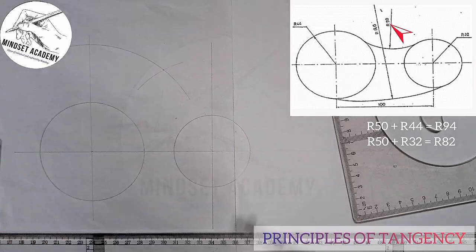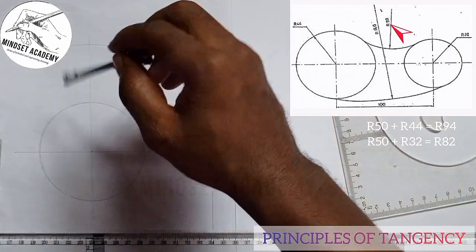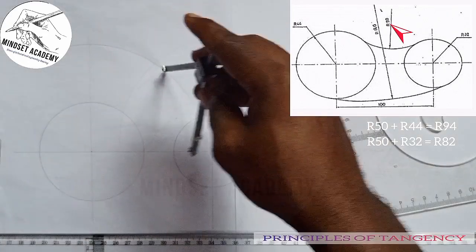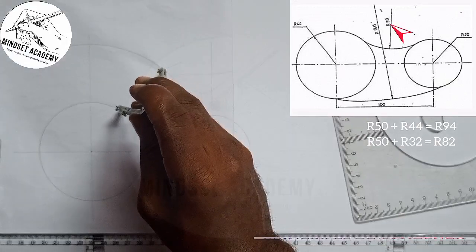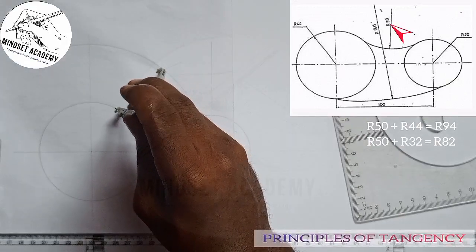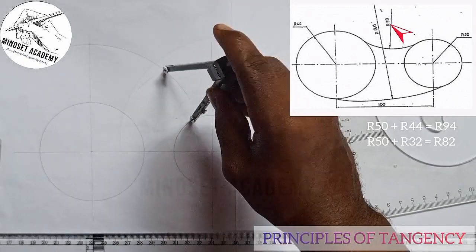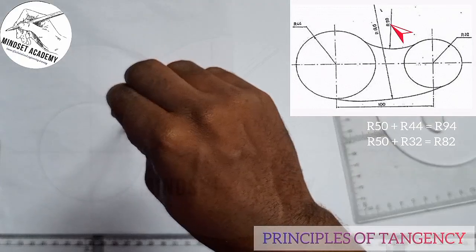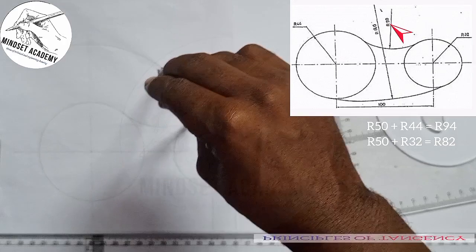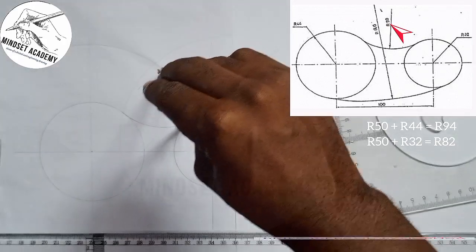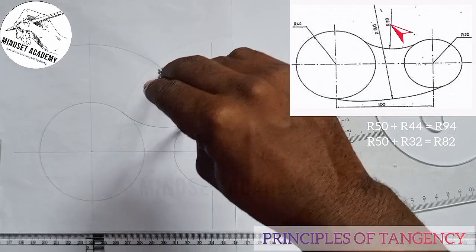When I place it at this point where they meet, I'll move the compass to touch the circumference of the circles without digging, ensuring it is tangential to touch the circumference of the circle in this manner.